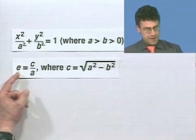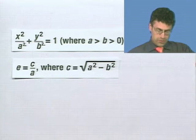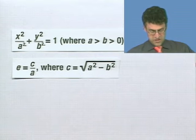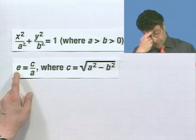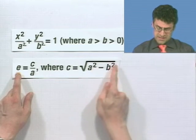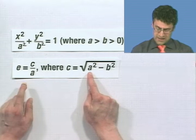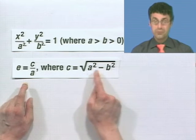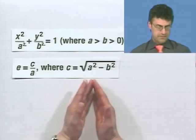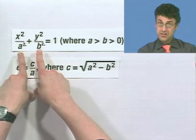Suppose that e were to be very small. If e were very small, then what would that mean? It would mean that c is small. How do you make c small? The way you make c small is to have a squared and b squared be really close to each other, so their difference would be very close to 0. Ideally, if it was 0, then they'd be equal. If they were equal, notice in that case we get a circle.